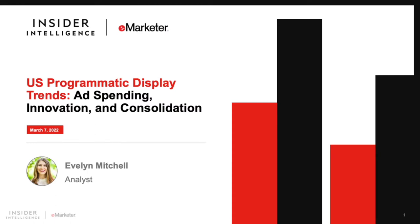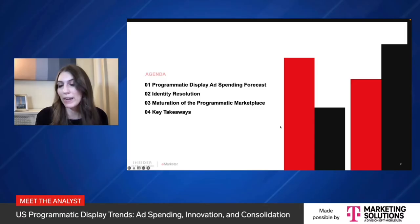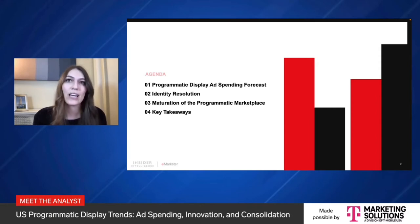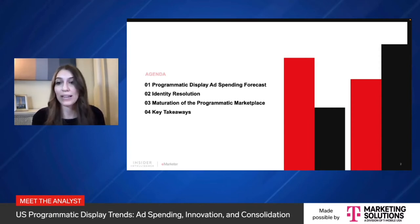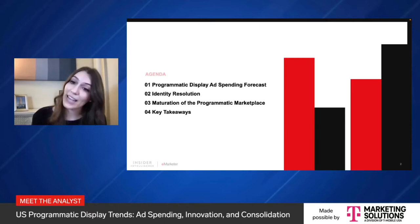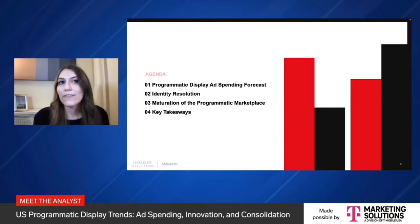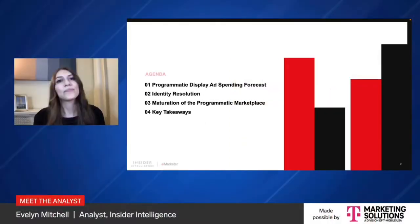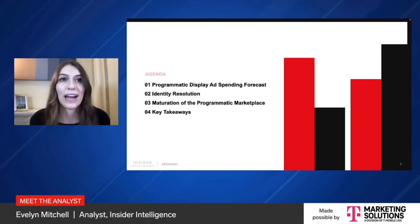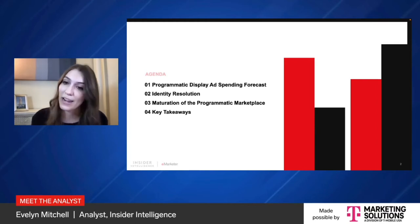Thanks, Paul. On the agenda for today: first, we'll go over some spending trends from our latest forecast in programmatic digital display. We'll look at top-level ad spend and then break things out by device, format, and transaction method. Next, we'll dive into some market conditions shaping programmatic display this year and next, namely identity resolution and functions of maturation in the marketplace. Then we'll go through some key takeaways. Let's get started with our programmatic display ad spending forecast.